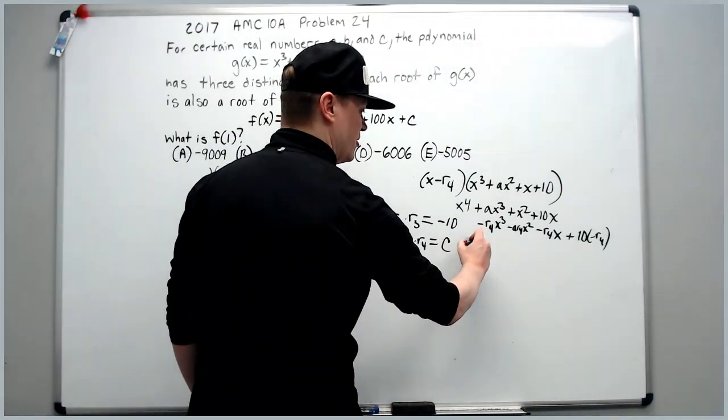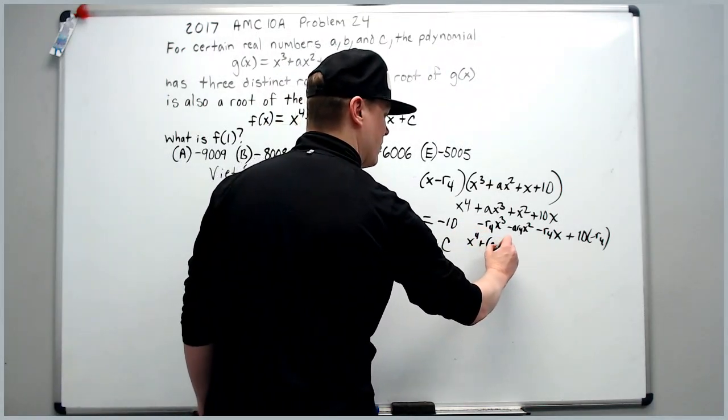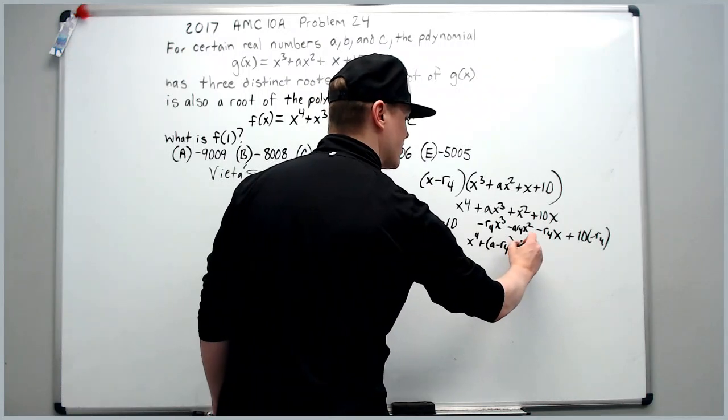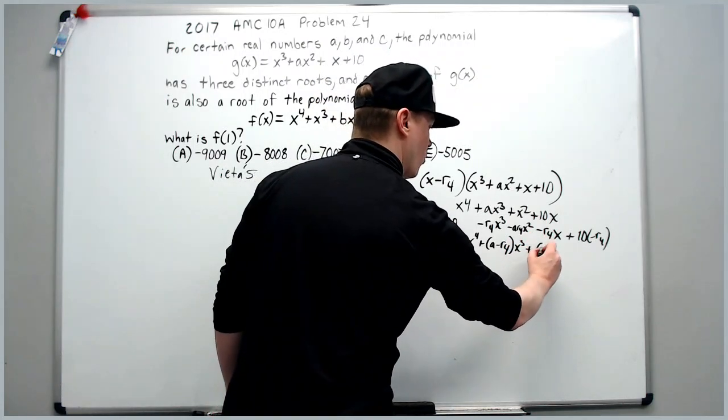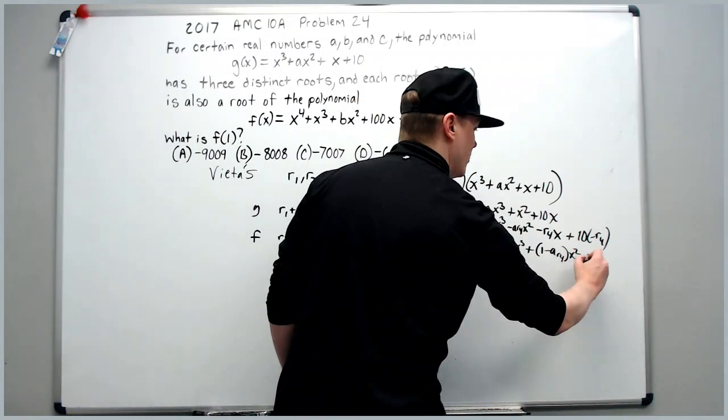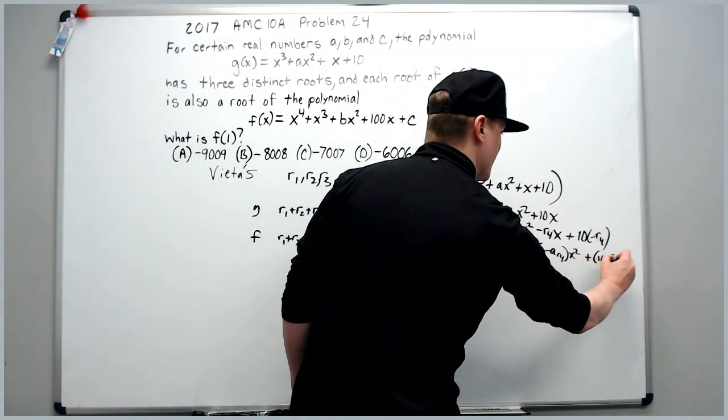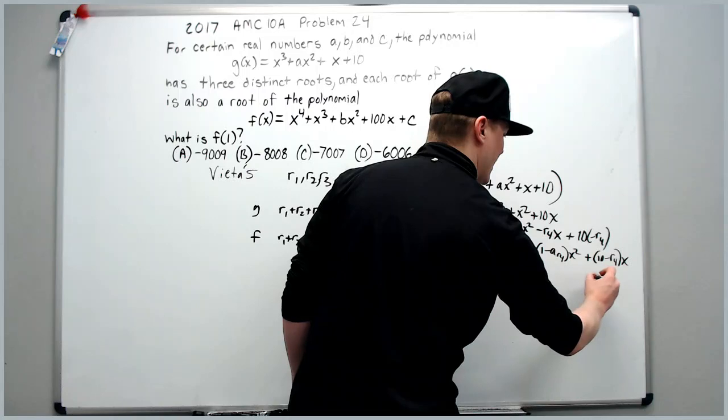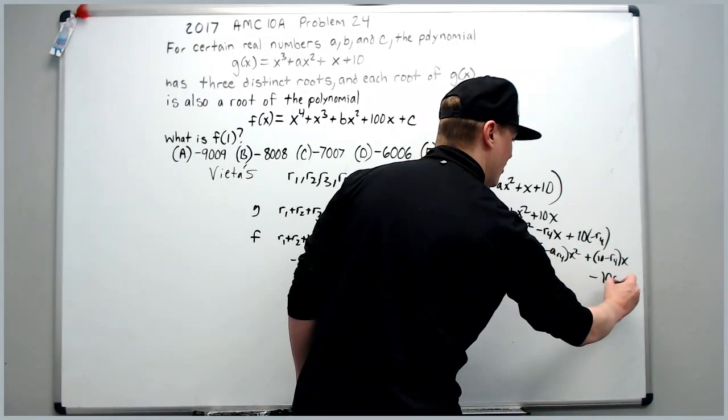All right, combining like terms, we get x to the fourth plus a minus r4 x cubed plus 1 minus a r4 x squared plus 10 minus r4 x, and finally minus 10 r4.